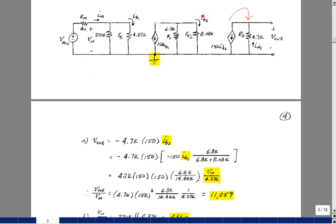And then I've got to solve for the current IB2. We can do that a variety of ways, but we could use a current divider. So the current in this resistor is the other resistor, which is 6.8 K, over the sum of the two times the current in this direction, which is a minus 150 IB1. So I can substitute that in for IB2. So I've got V out now in terms of IB1. And then V in is right here, and it's right across the RPI 1.